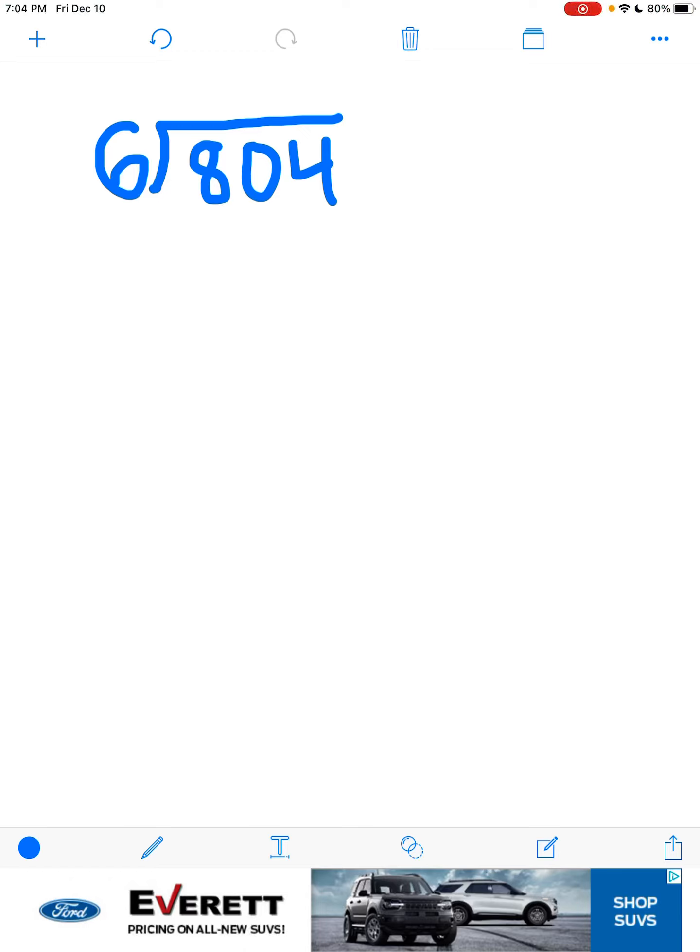Six can go into eight one time, so you do that, and six times one equals six. You subtract that and drop down that zero.